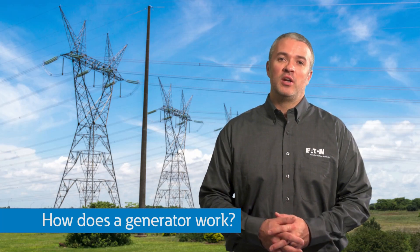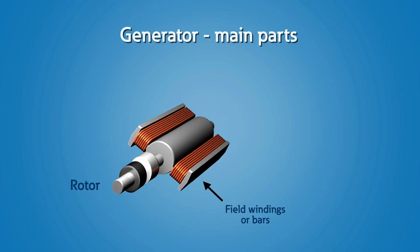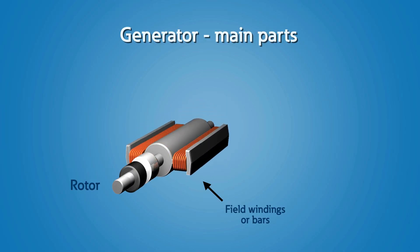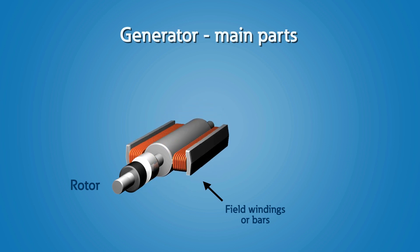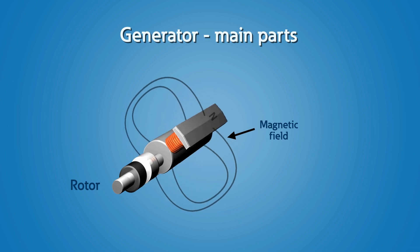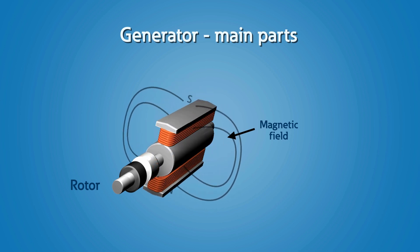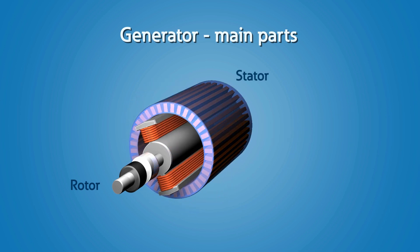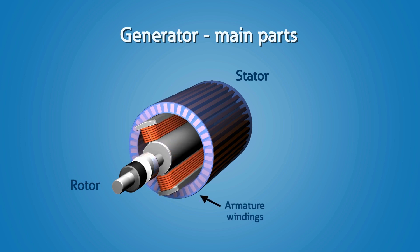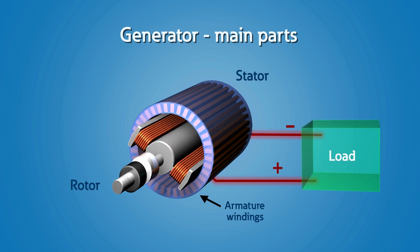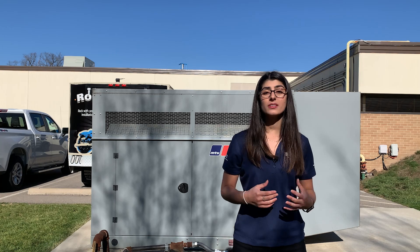How does a generator work? The two main parts of a generator are the rotor and the stator. The rotor is the part that rotates and consists of many loops of copper wire or bars called field windings. Field windings create the magnetic field induced on the metal core. The stator is the stationary part and consists of copper windings called armature windings. Power flows out of these armature windings towards the load.